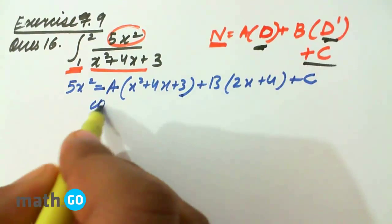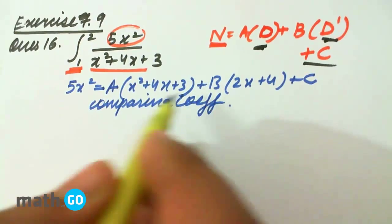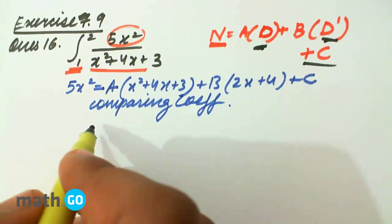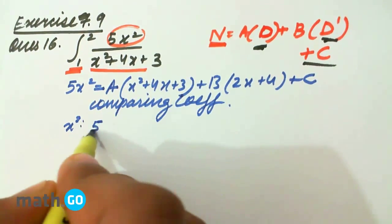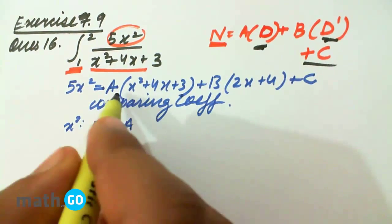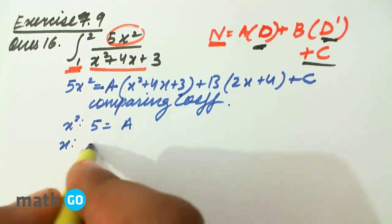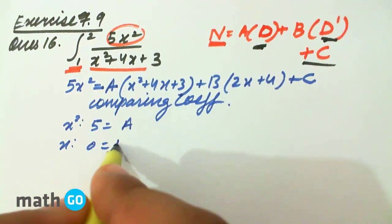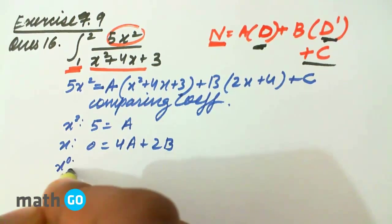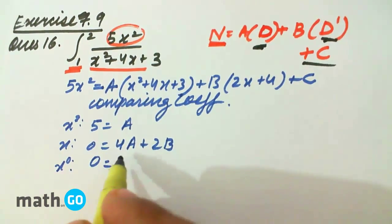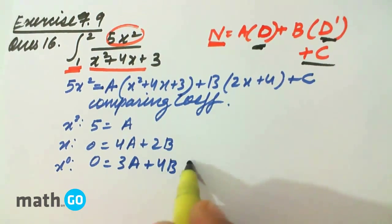So solving as we have done earlier by comparing coefficients, here we will get, for x² coefficient, 5 equals A. For x we have 0 equals 4A plus 2B. And for constant term, we have 0 equals 3A plus 4B plus C.